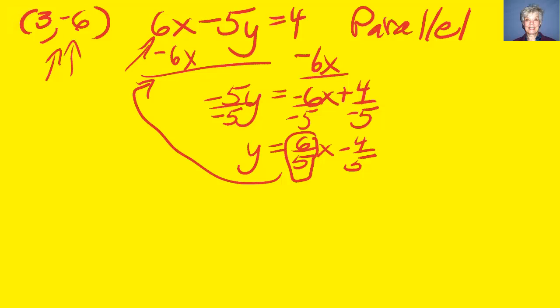Alright, so let's see. y minus y1 equals m times x minus x1. So y minus negative 6 will give us y plus 6 equals 6 fifths times x minus 3.